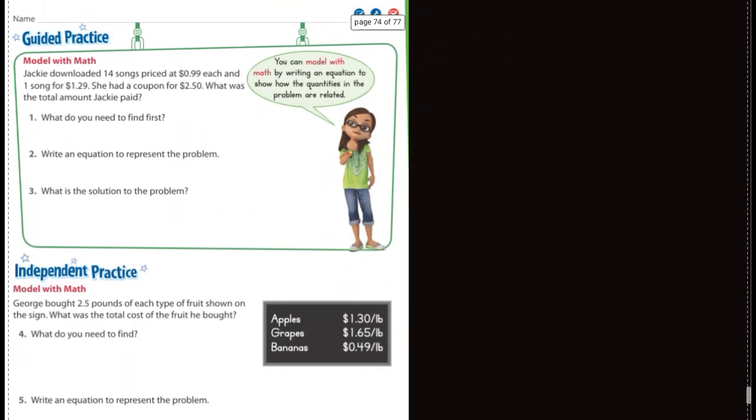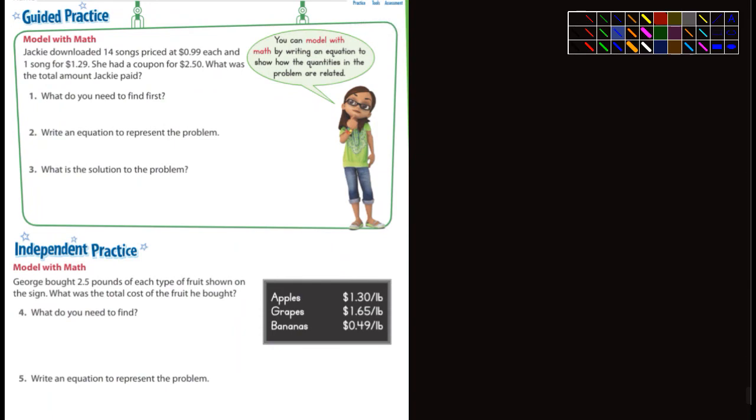Let's look at the next page, the guided practice. It says Jackie downloaded 14 songs at 99 cents each and one song for $1.29. She had a coupon of $2.50. What was the total amount she paid? What do you got to find first? You got to find first the total cost of the songs. Write an equation to represent the problem.